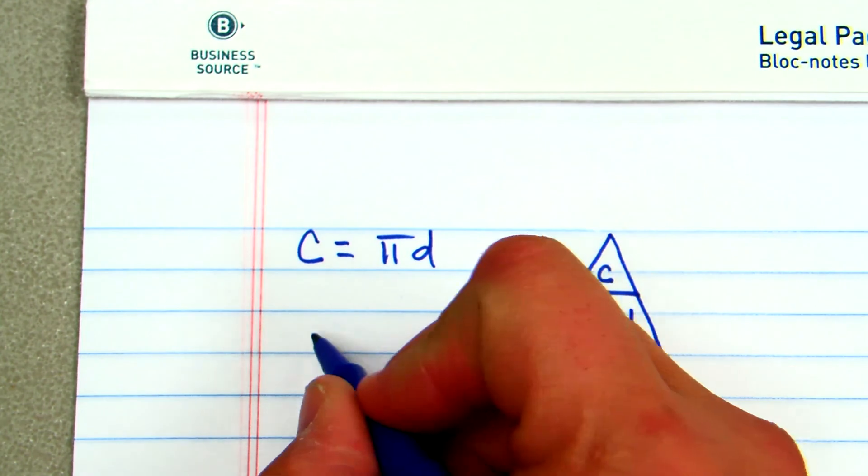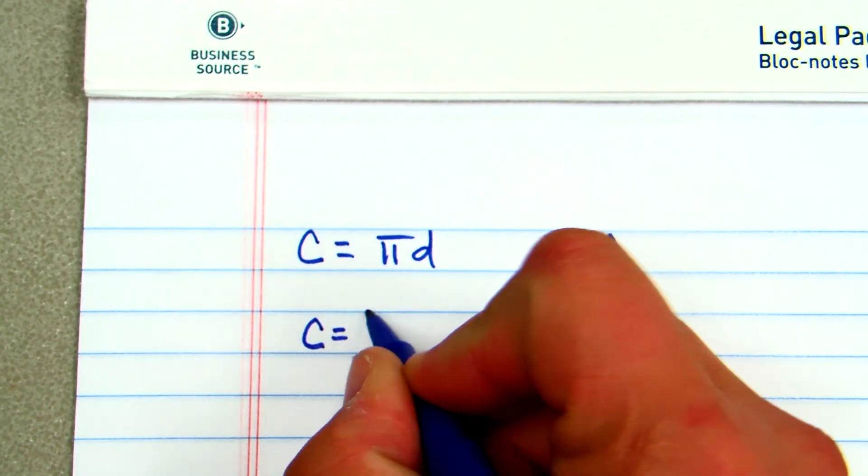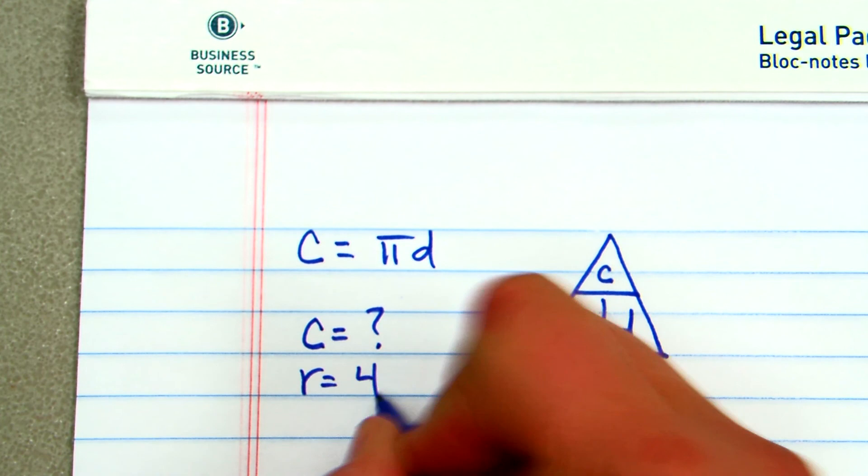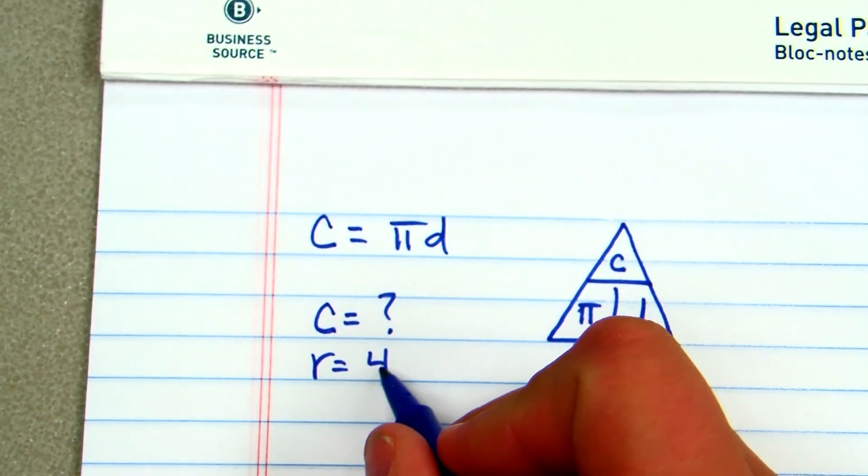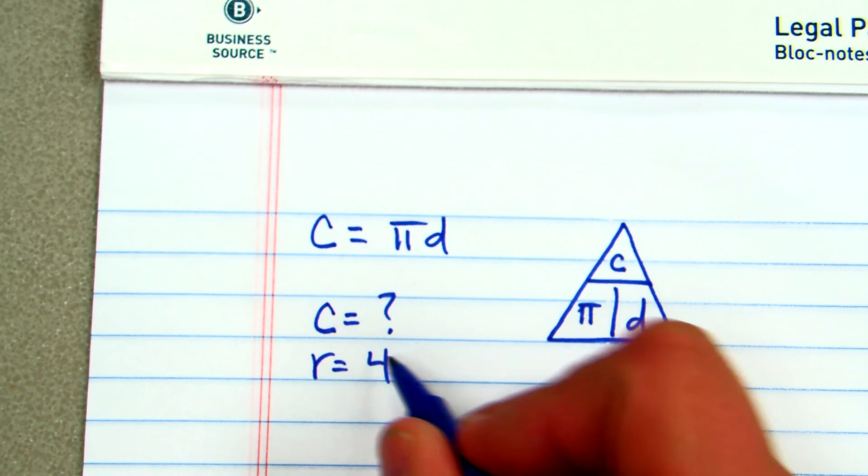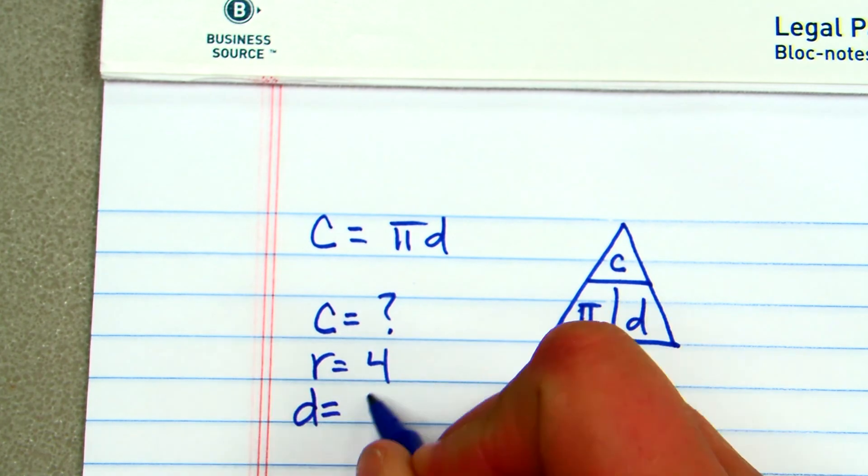So if we had a problem where I want to know what the circumference is, and I gave you a radius of 4. Now, what we need to do right off the bat is go ahead and multiply our radius times 2. That'll give me a diameter of 8.